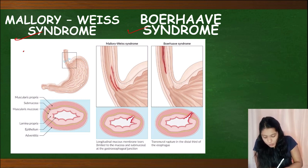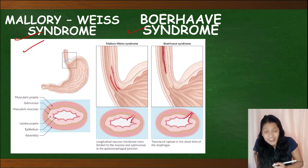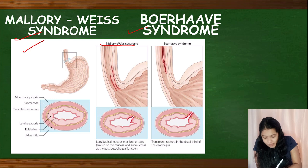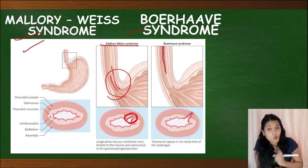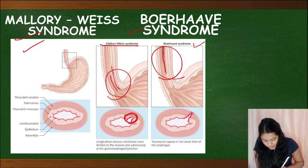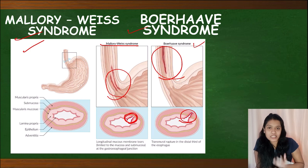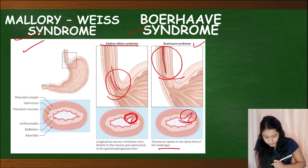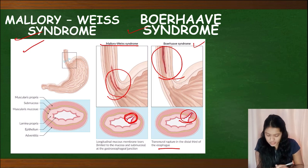Both Mallory-Weiss syndrome and Boerhaave syndrome are tears in the wall of the esophagus. In Mallory-Weiss syndrome, the tear is in the mucosa and submucosa only. But in Boerhaave syndrome, the rupture is transmural — it includes all the layers of the esophageal wall — and it occurs in the distal third part of the esophagus.